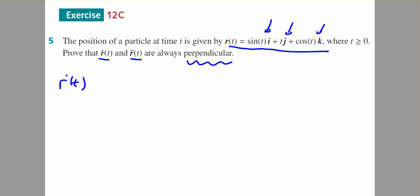So r'(t) will be the first derivative. The derivative of sin(t) is cos(t) in the i, plus the derivative of t is 1 in the j, plus the derivative of cos(t) is minus sin(t) in the k.